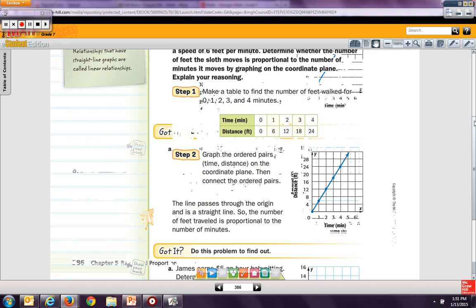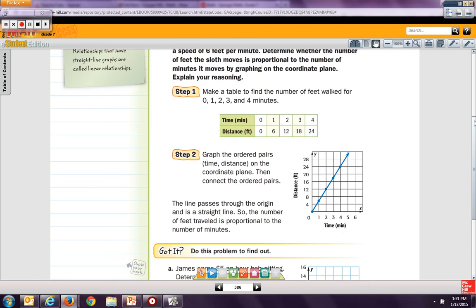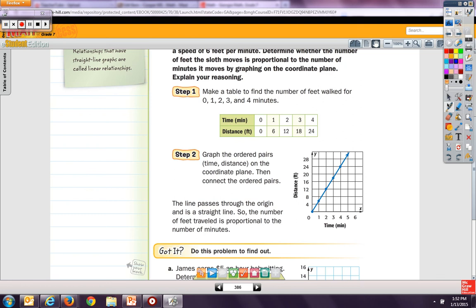And then it says distance: 0, distance 6, 12, 18, and 24. So it went 0 distance in 0 minutes. So that should be, if it's going to go on the origin, that should be your first point. Whenever your x is 0, your y should be 0. So your x and y should be 0.